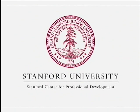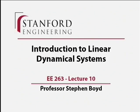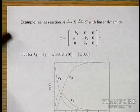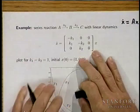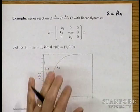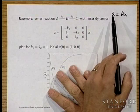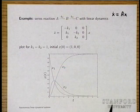This presentation is delivered by the Stanford Center for Professional Development. We're looking at examples of autonomous linear dynamical systems — systems of the form x-dot equals Ax. This basically says that the derivative of each component of the state is a linear function of the state itself.